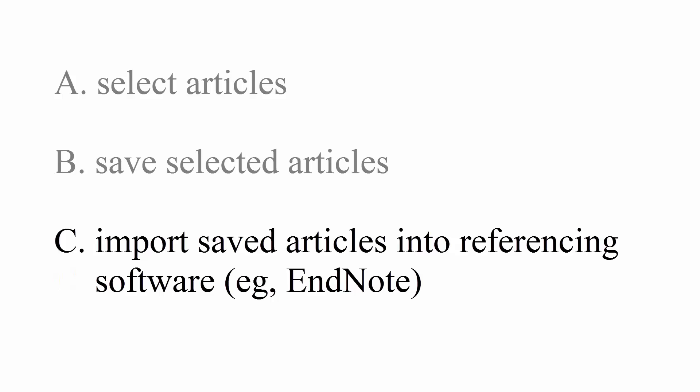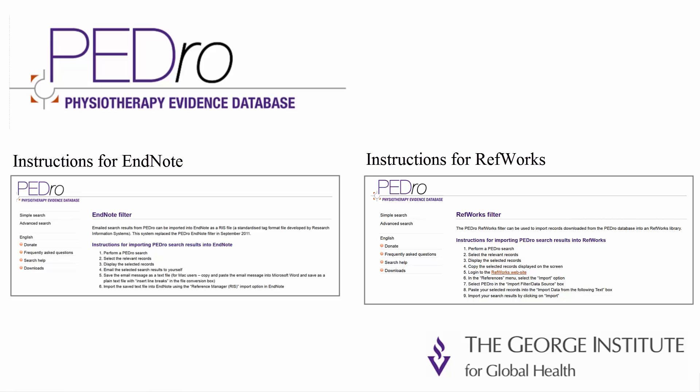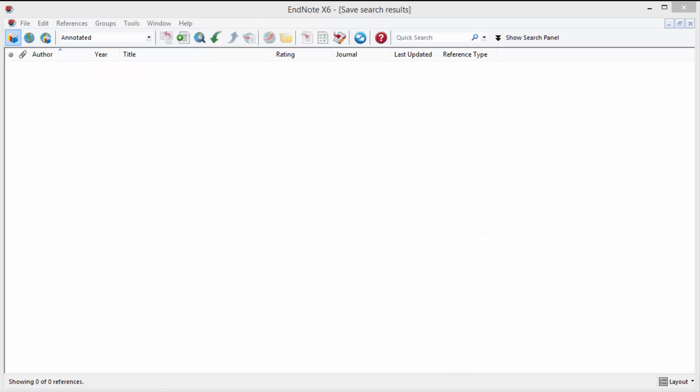After you have selected and saved the articles you are interested in, you may like to import them into referencing software like EndNote. Instructions for importing saved articles into EndNote and RefWorks referencing software are available on the Pedro website, which you can access by clicking these links. In EndNote you can import your saved articles in Research Information System or RIS format.